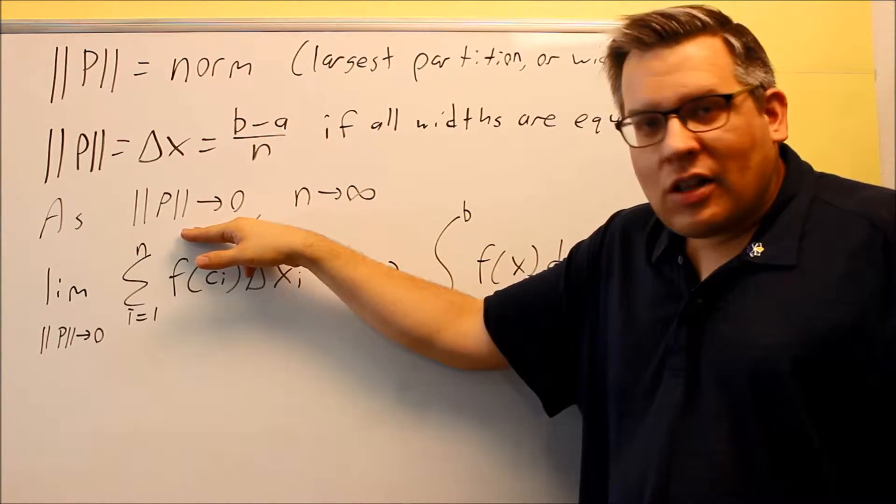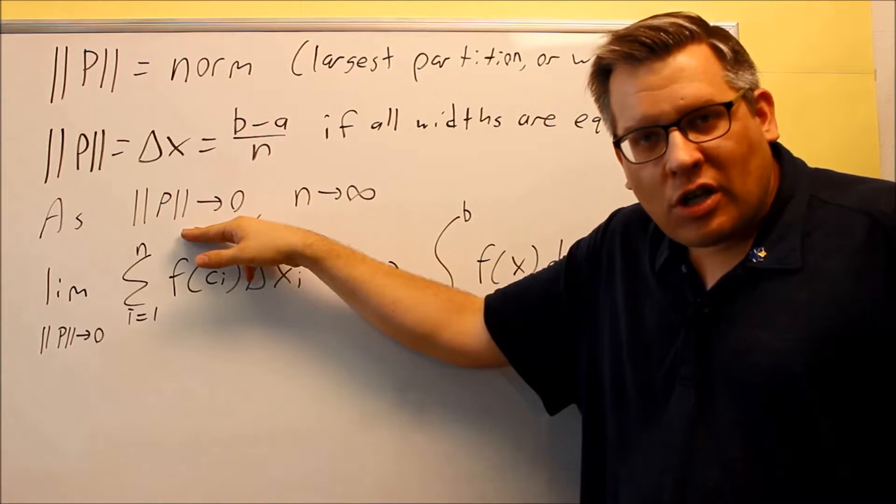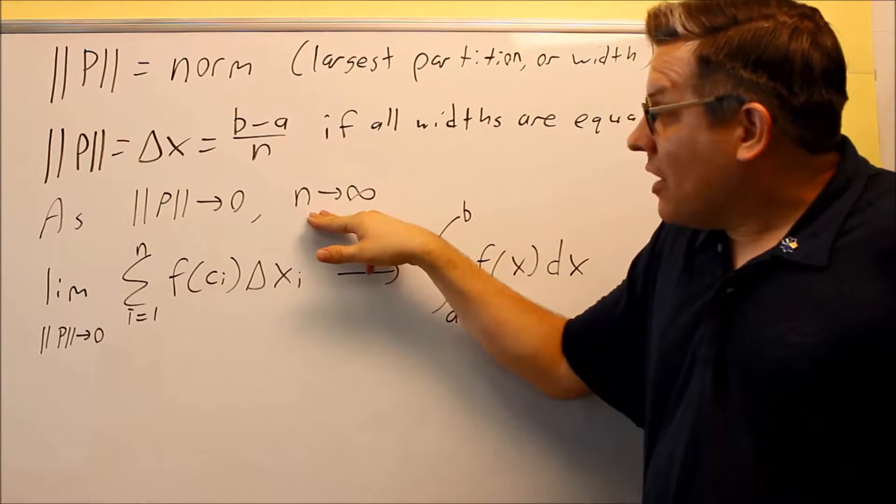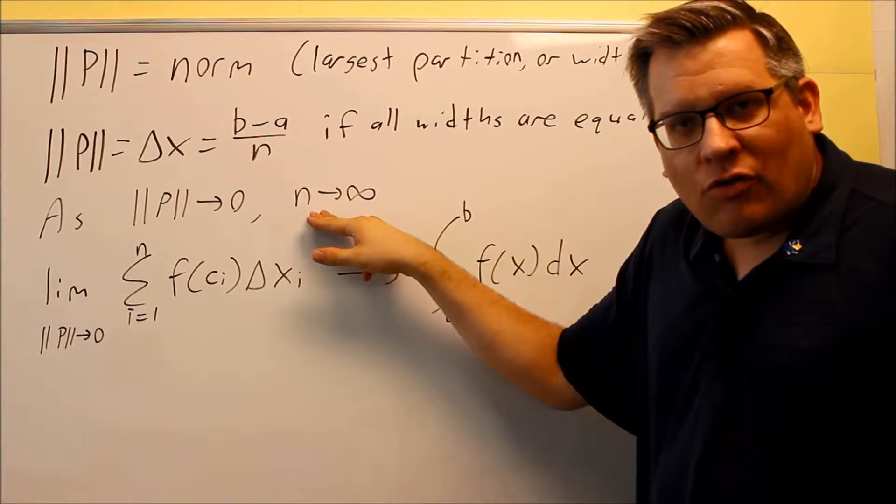What does this mean? This is saying that if the widths of my rectangles are all going to zero, that means that the number of rectangles is going to go to infinity.